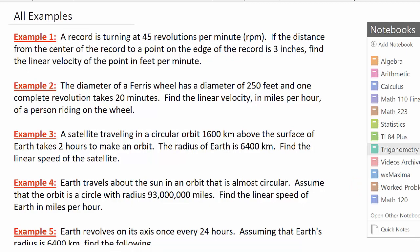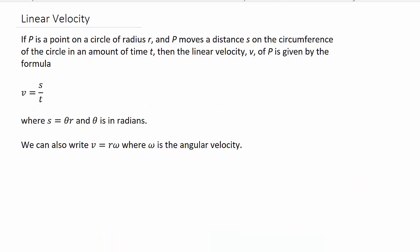But before we get into looking at the problems, let's look and see linear velocity. It says if P is a point on a circle of radius R and P moves a distance S on the circumference of the circle in an amount of time T, then the linear velocity V of P is given by the formula V equals S over T, where S is theta times R and theta is in radians. Basically S, you should recognize this formula. This is just the formula for arc length. And it's important that you make sure that theta is in radians. And also, to find the linear velocity, we can write the linear velocity V is equal to R times omega, and omega is the angular velocity. So if you know the angular velocity and the radius, just plug it in there and that will give you the linear velocity also.